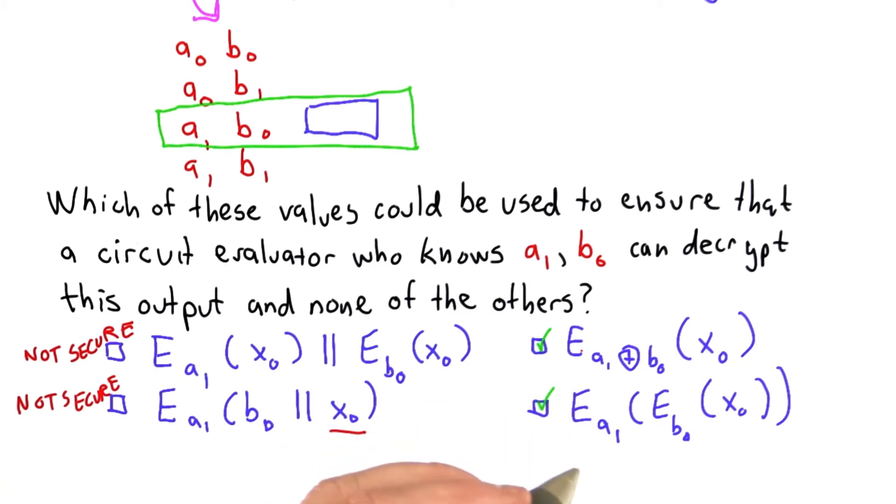The other two make it so that obtaining x0 depends on both keys. It depends on knowing both a1 and b0.